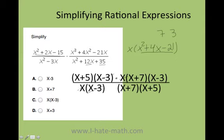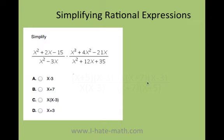This x can go with its x. The x plus 5 can go with x plus 5. X plus 7 can go with x plus 7. And finally, I'm only left over with x minus 3, and that's it. That's how you simplify this rational expression.